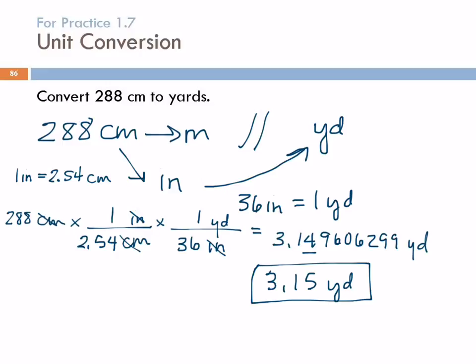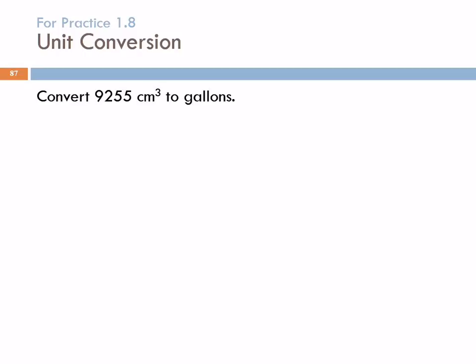A student asks about the 36 — are there sig figs to consider? There are exactly 36 inches in one yard, so we could write 36.0000 if we wanted — it's defined that way. Exact conversion factors have an infinite number of significant figures, so you don't have to worry about them. If a conversion factor is exact, just ignore it for sig fig purposes.